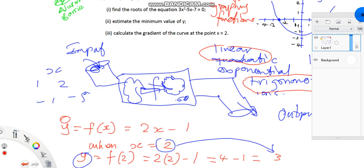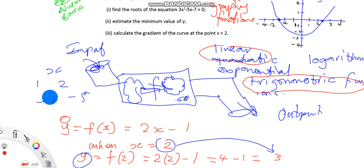When we put these values of x into the machine, what comes out is the value of y. Here we have values of x, but when we put them into the machine, we have values of y. When we put the value 2, which is the value of x, into the machine, we got 3 as the output, so 3 is what comes out here.